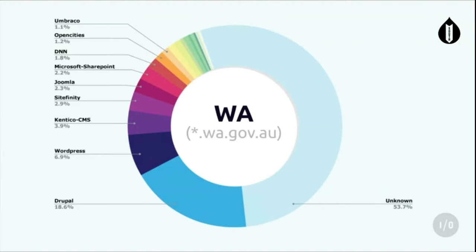WA - anyone from WA in the house? You do things very differently in WA. 53% of you are unknown, aren't running anything normal. 18% of you are running Drupal. And then a fairly long tail, including DotNetNuke - that's a blast from the past - and Joomla, you just can't kill it.